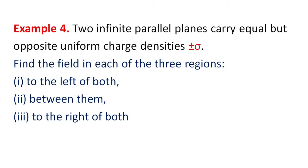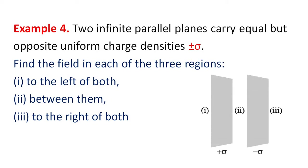Example 4: Application of Gauss's Law. Two infinite parallel planes carry equal but opposite uniform charge densities, plus sigma and minus sigma. We need to find the field in each of three regions: region one to the left of both planes, region two between them, and region three to the right of both.